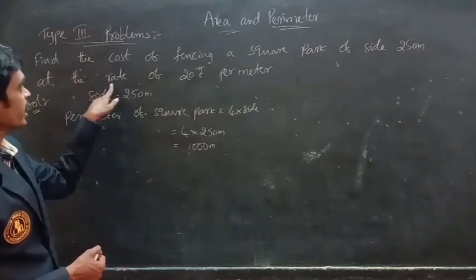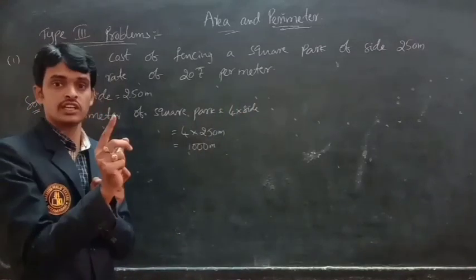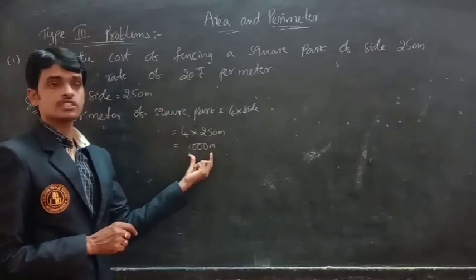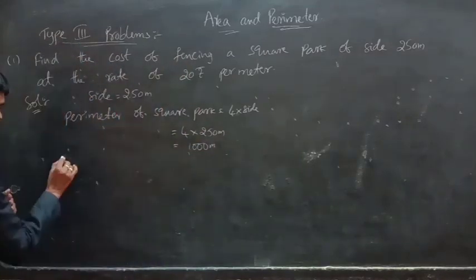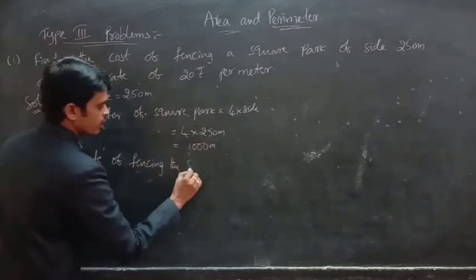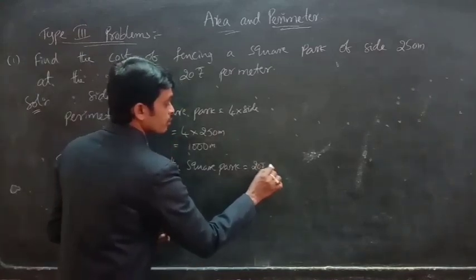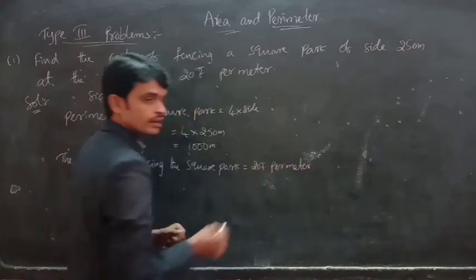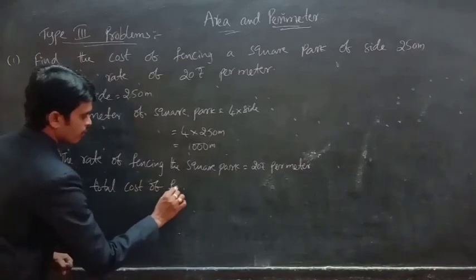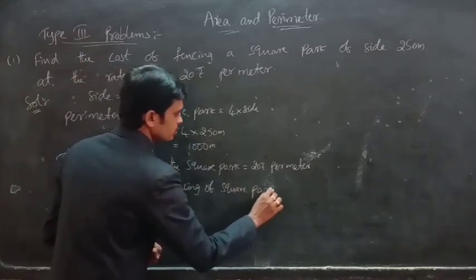The rate of fencing of the square park is 20 rupees per meter — that means for 1 meter, the cost of fencing is 20 rupees. We have to calculate the total cost for 1000 meters. The rate of fencing the square park is 20 rupees per meter.